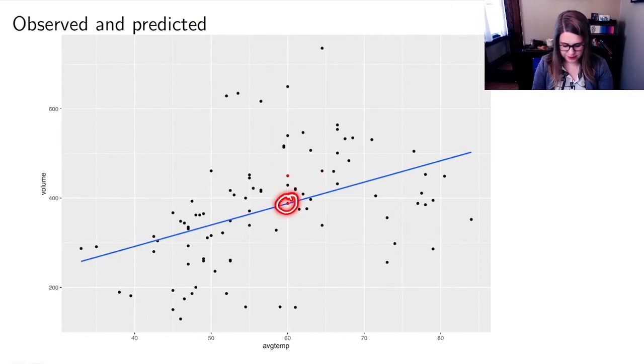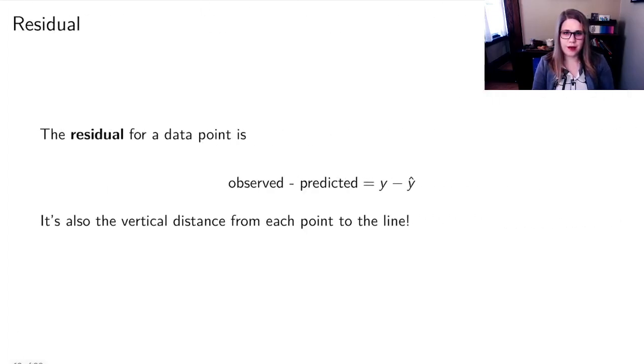But what does that really mean? So I've got my predicted value for a 60 degree day, which is right here on the line. And then I don't think this is actually the day with 540 people, I think that would be the one up here. So maybe I will make that one red as well. And so if I wanted to think about the difference between my observed value, which is this one that I'm making larger up here, and my predicted value, which is this one down here, it would just be this vertical distance here. So the distance between the real value and the predicted value. And we call that line a residual. So the residual for a data point is the observed value minus the predicted value, and that's y minus y hat, and it's that vertical distance.